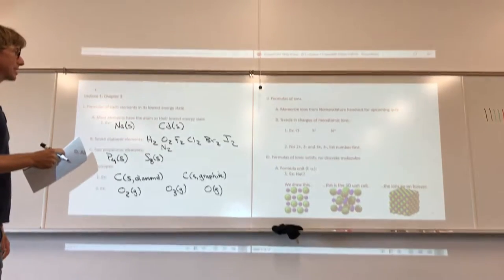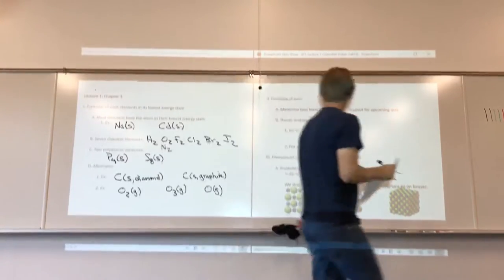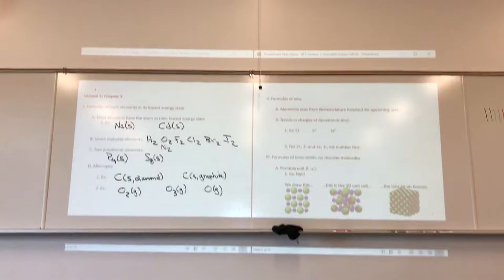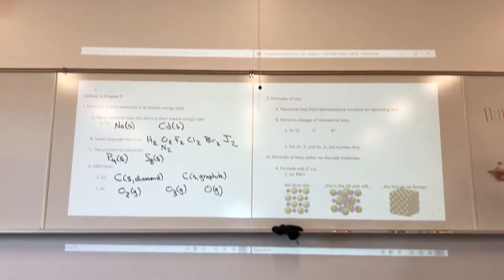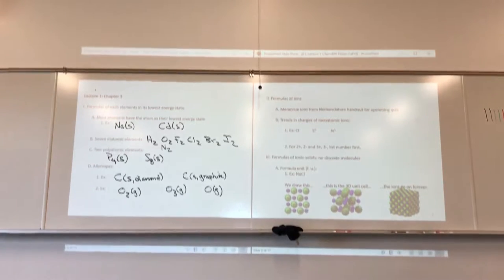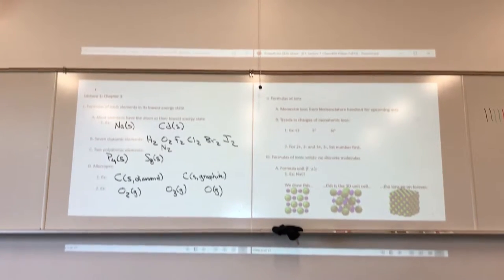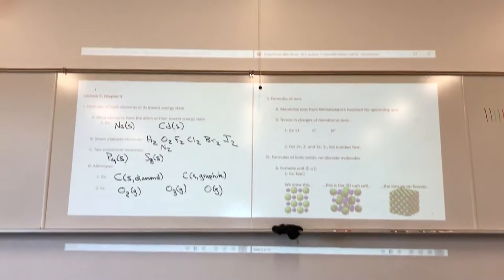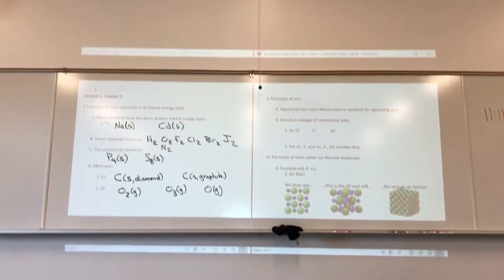Trends and charges of monatomic ions — as we go from the chloride ion to the sulfide ion to the nitride ion, we notice a trend. Chloride is negative one, sulfide is negative two, nitride is negative three. On the other side of the periodic table, Group 1 forms ions of positive one, Group 2 is positive two, and aluminum in particular is positive three.